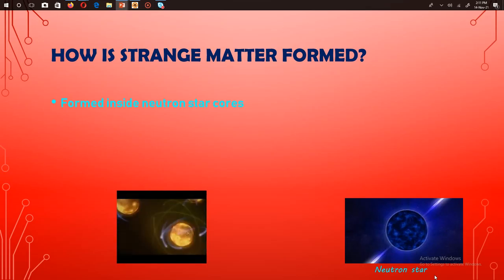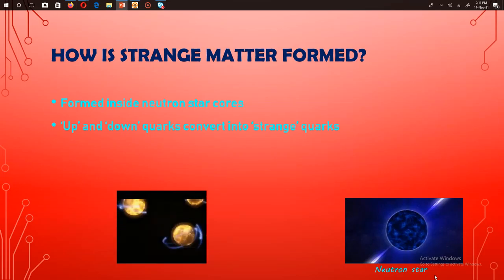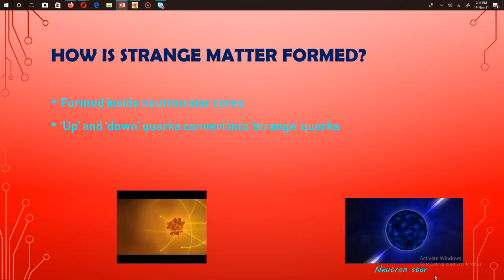Strange matter is basically formed inside neutron star cores. Neutron stars consist of neutrons by the way. Up and down quarks are converted into strange quarks.